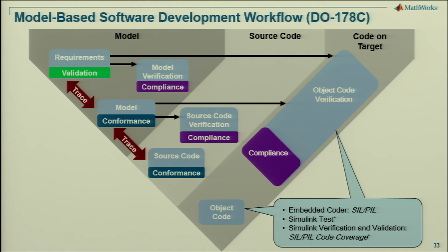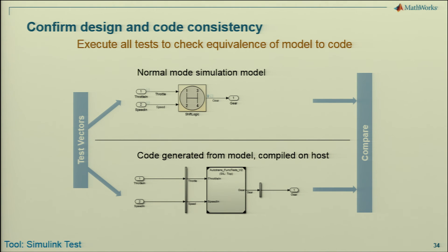Beyond that, at the object code level, we have facilities to do hardware-in-the-loop integration testing, software-in-the-loop, and processor-in-the-loop testing for your object code as well. Being able to do coverage at that level is also important for showing conformance. Here we see an example of some test vectors going through your simulation and through the generated code on the host, doing a comparison to see equivalency on your results.